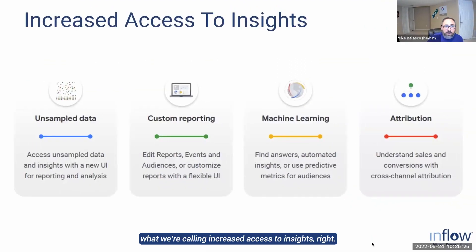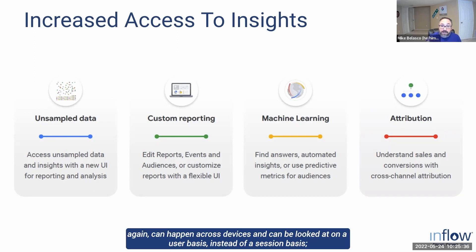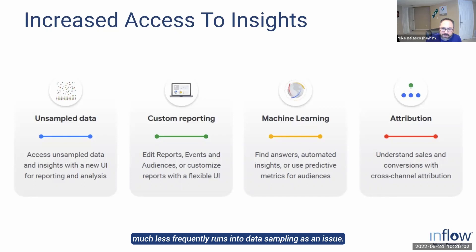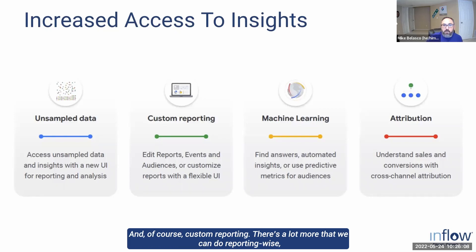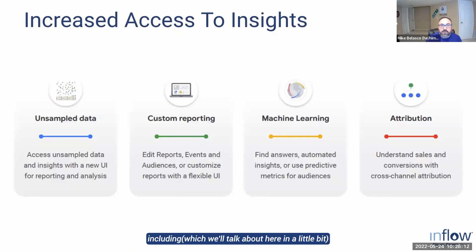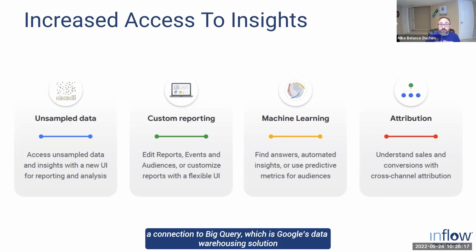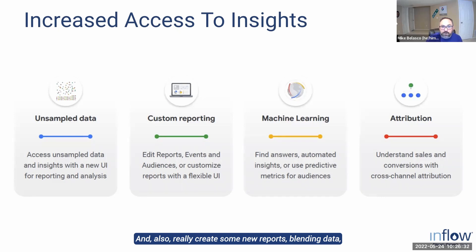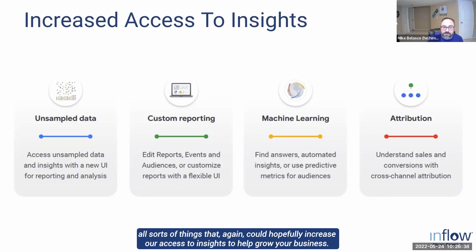Another thing we're excited about with GA4 is increased access to insights through features like machine learning, different attribution models across devices on a user basis instead of a session basis, and access to unsampled data. Depending on how much data we pull, Universal Analytics sometimes sampled data — GA4 has much more robust reporting that far less frequently runs into data sampling issues. There's also custom reporting and connection to BigQuery, Google's data warehousing solution, which helps get around data retention issues.